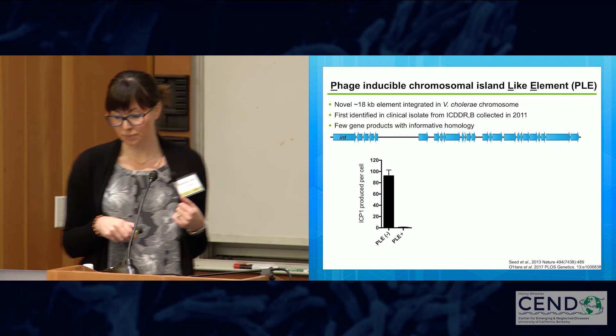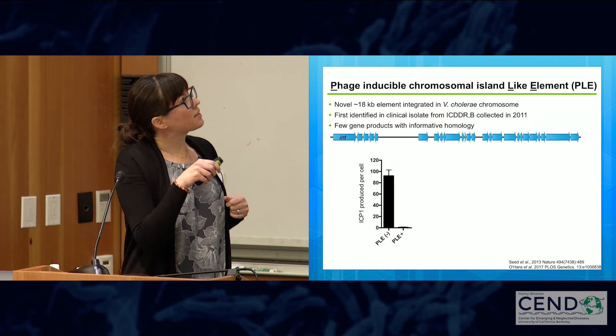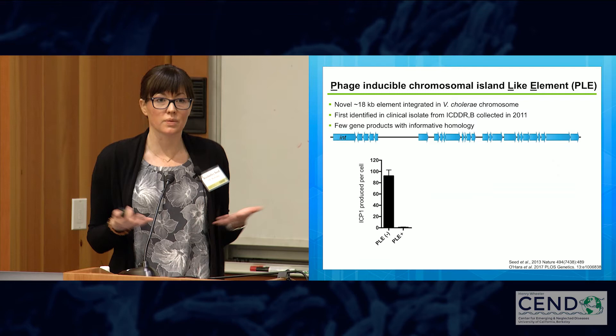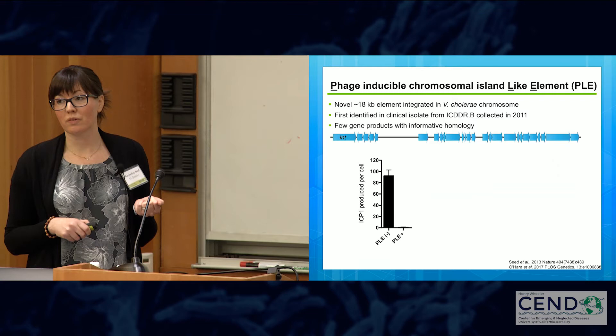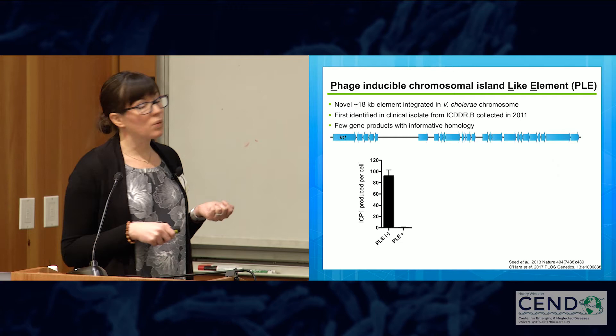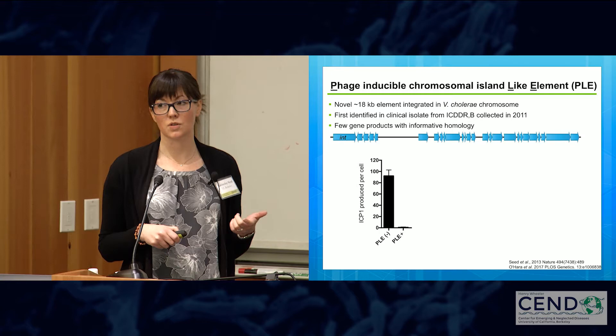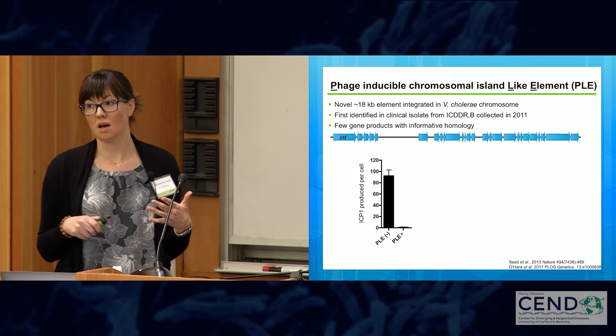The PLEA was first isolated from a strain from the ICDDRB in 2011 and was a completely novel element. Most genes in this 18 KB element have no informative homology to anything — no conserved domains, full of hypotheticals. Like any mobile genetic element, it has an integrase at one end, but otherwise nothing in the sequence indicates it confers phage resistance. It doesn't carry CRISPR, it doesn't have restriction modification genes. My lab is really interested in understanding how this element functions to block phage, because it's not a typical system you can just look at and understand.